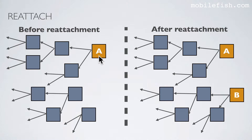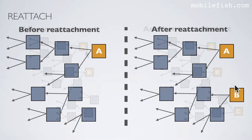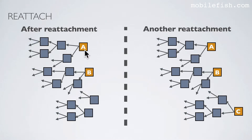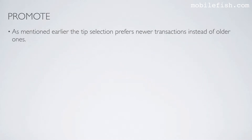Let's assume this is the original transaction which is pending. You can reattach this transaction — a new transaction is created with the same signed bundle as the original and attached to a different part of the tangle, as demonstrated here. This is before reattachment, and this is after reattachment — what you have created is a double spend situation. If both transactions are still pending, you can reattach again or reattach the already reattached transaction. These three transactions all have the same signed bundle. As mentioned earlier, tip selection prefers newer transactions instead of older ones.